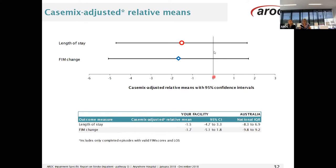Looking at this graph, the line at zero represents what length of stay we would have expected you to achieve given your mix of cases. The red circle line shows your service's length of stay is negative 1.5 days, which means that on average your patients had a shorter length of stay than expected given your case mix. Looking at the FIM change, your service is negative 1.7, which indicates that your service is achieving less functional improvement than expected given your case mix. At the bottom of the graph there is a data table giving the FIM change and length of stay with the 95% confidence intervals for your service and national data — there's also a definition of confidence interval in the glossary.